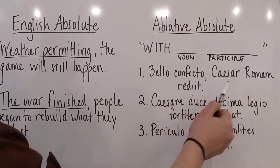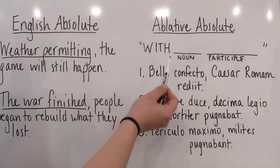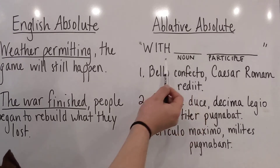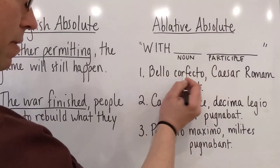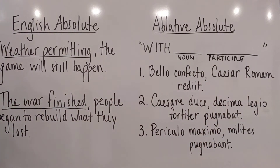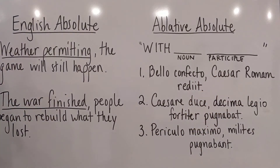'Bello confecto, Caesar Romam redit.' The ablative absolute is right here: 'bello confecto.' It consists of a noun in the ablative case and a perfect passive participle — check out the participle video — in the ablative case, agreeing with it. They agree with each other but not with anything else in the rest of the sentence. If we took the absolute out, 'Caesar Romam redit' is a fine sentence on its own. So: 'with the war' — with the noun — then translate the participle: 'having been finished,' 'having been completed.' With the war having been completed, Caesar returned to Rome. That's your basic, easy training wheels translation — the one you should start with.